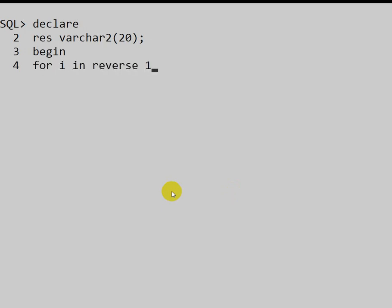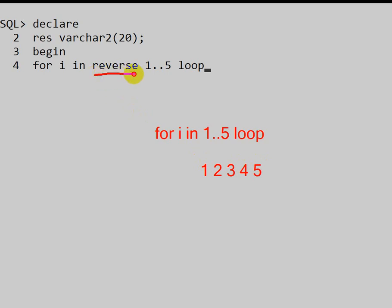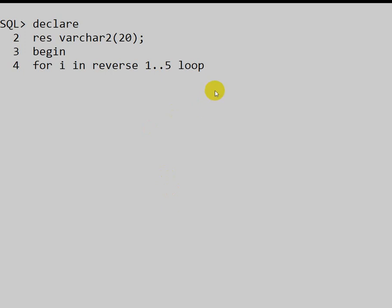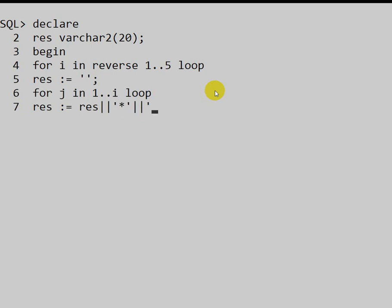We write: FOR i IN REVERSE 1..5 LOOP. The REVERSE keyword means that normally 'FOR i IN 1..5' goes from 1 to 5, but with REVERSE it goes from 5 down to 1. Inside the outer loop, we assign result as an empty string. Then the inner loop: FOR j IN 1..i LOOP, and inside we do result := result || '*' || ' ' (concatenating a star and a space).